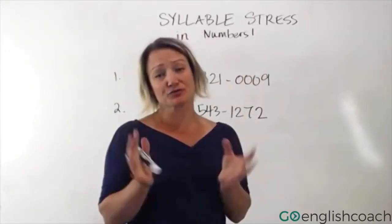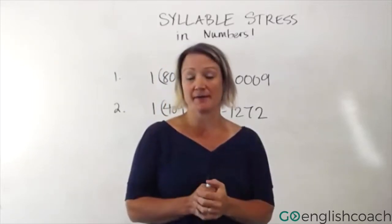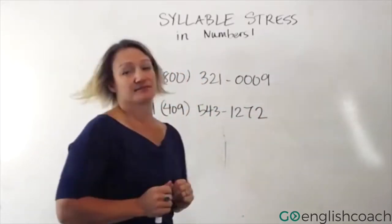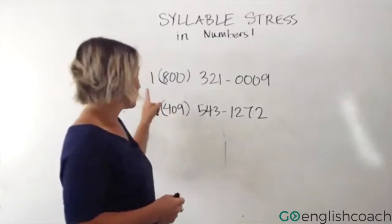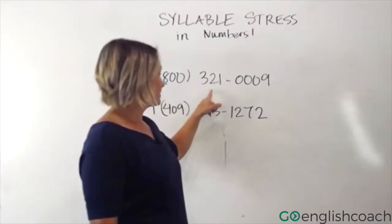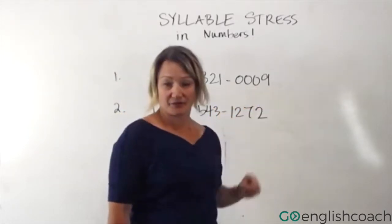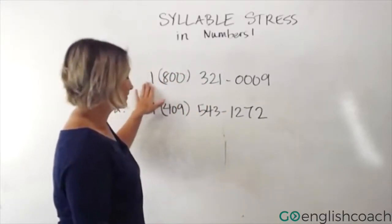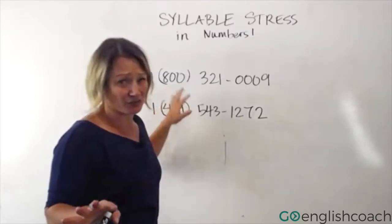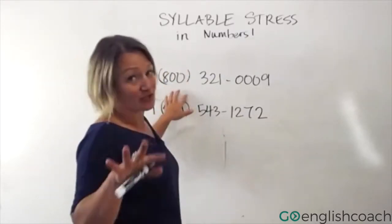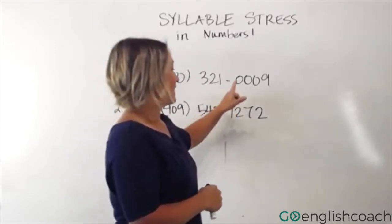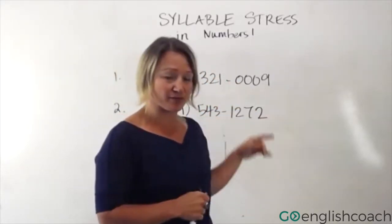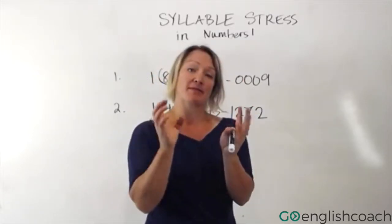Another cool thing to learn is how we group numbers when talking about phone numbers. In the United States, we group things like this. This phone number would be said: 1-800-321-0009. We group things as: the long-distance code, then the area code. Those are not real numbers — I just created them. Then 3-2-1 as individual numbers, and then 0-0-0-9. On the last four digits of a phone number, many times you can group them into twos.